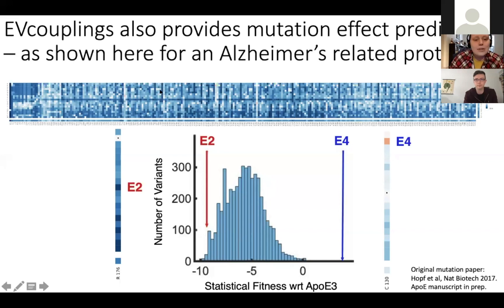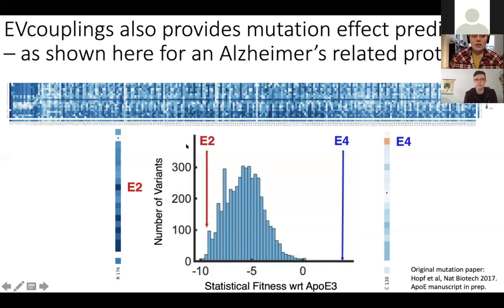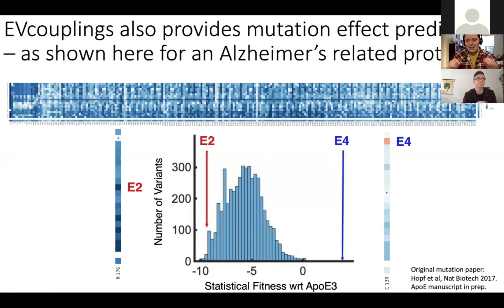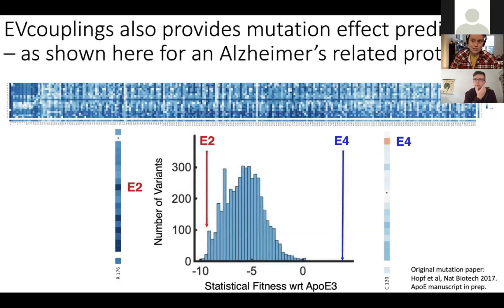Regarding mutation effect predictions, we looked at ApoE, a gene that incorporates a risk factor for Alzheimer's disease. There are two common isoforms: one makes you much less susceptible to Alzheimer's in old age, while the other makes you up to 15 times more likely to develop it. We are able to get mutation effect predictions for basically any mutation you might want to make.